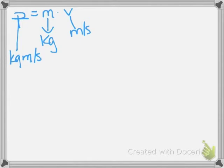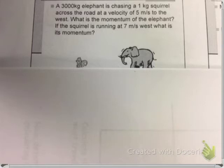So we're going to go ahead and move on to a quick practice problem. Now, one of the sample problems says, a 3,000-kilogram elephant is chasing a 1-kilogram squirrel across the road at a velocity of 5 meters per second to the west. What is the momentum of the elephant if the squirrel is running at 7 meters per second west? What is the squirrel's momentum?